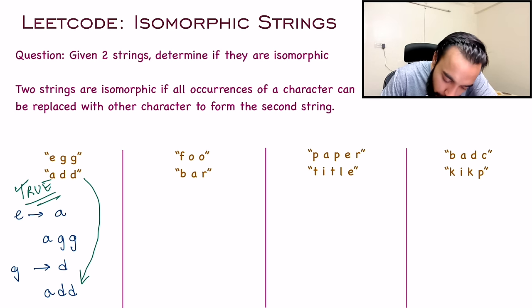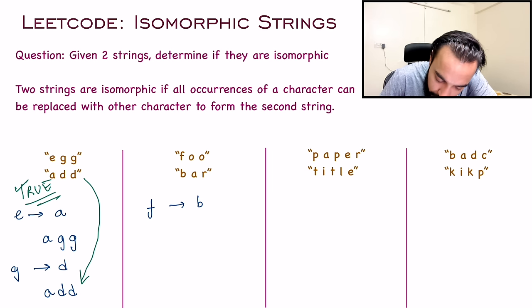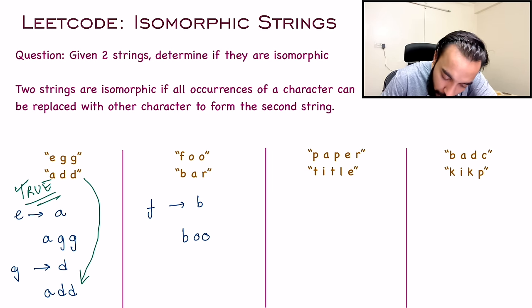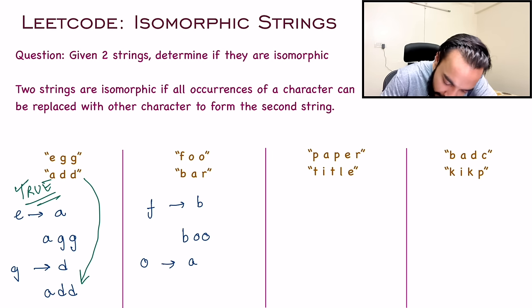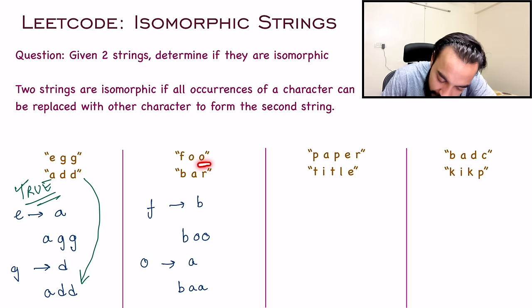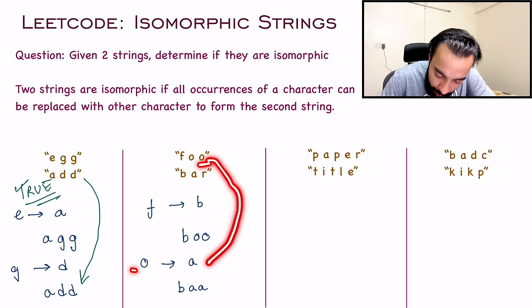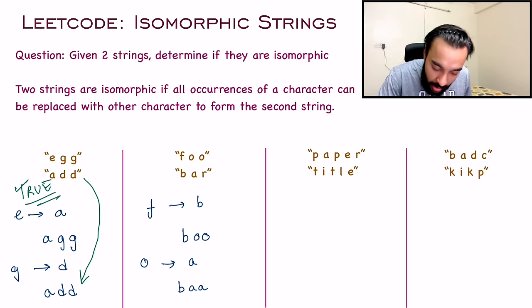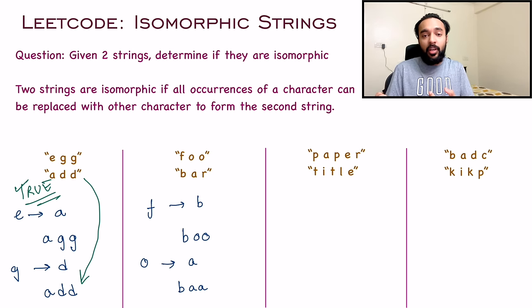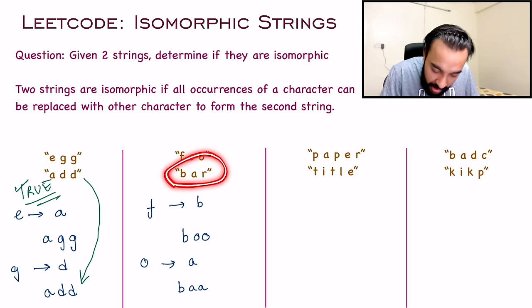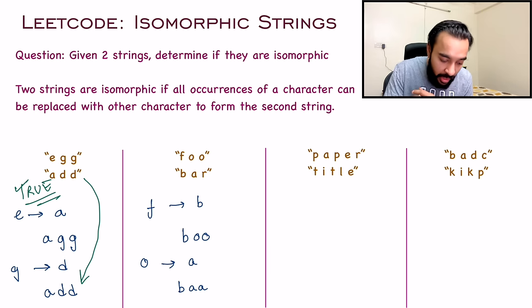In the second test case, you proceed with the first character F and replace F with B, so you get BOO. Now you look at the second character O, replace O with A, and your string becomes BAA. The third character is O again, but you have already replaced O with A and hence you cannot replace O with R now. There is no way to achieve BAR from FOO, so for this test case false is your answer.